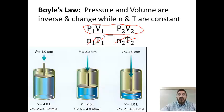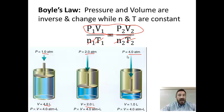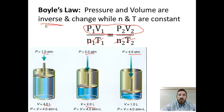What happens to volume as pressure changes? At one atmosphere, volume is four liters. When we go to two atmospheres — pressure doubled — the volume is halved. At four atmospheres, the pressure is four times greater than initially, but the volume is four times less. So Boyle's Law values are inverse: as one increases, the other decreases proportionately.